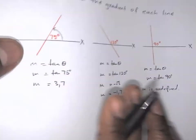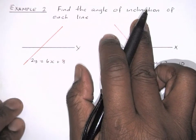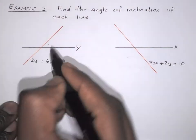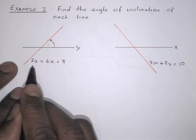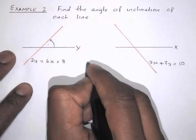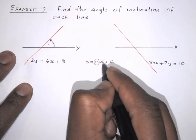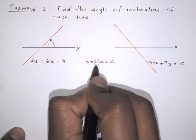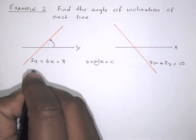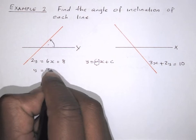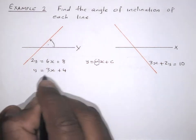Let's look at another example. This example says: find the angle of inclination — the size of that angle above the x-axis. The line here is not in standard form. Remember the standard form is y equals mx plus c, where m is the gradient. So we need to find m for this line. We divide everything by 2: y equals 3x plus 4. Therefore the gradient m is 3.